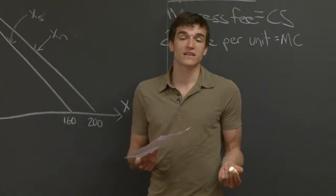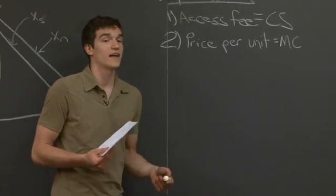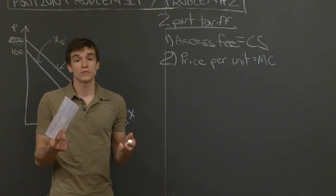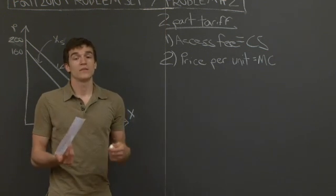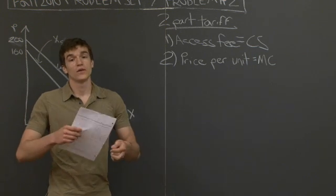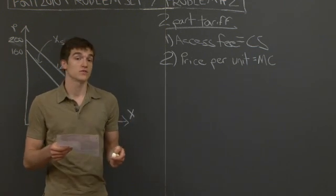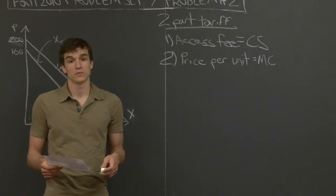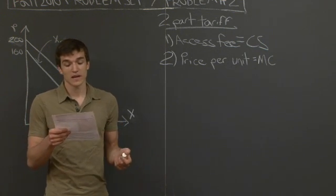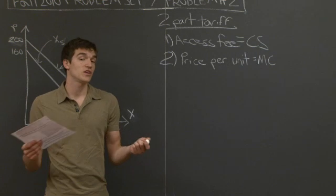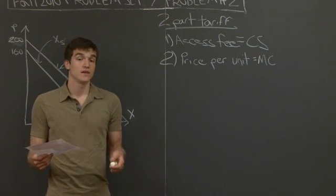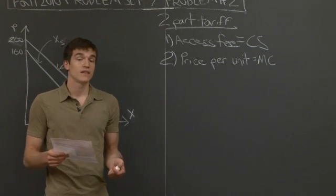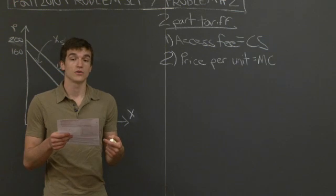This problem is really asking us about a situation in economics called a two-part tariff. When you have two groups of consumers with differing demand functions, a monopolist can actually capture the vast majority — or in most cases all — of the consumer surplus, if it can differentiate between the two groups. In this case, Napster can differentiate between students and non-students by having them enter their school ID or school email address.